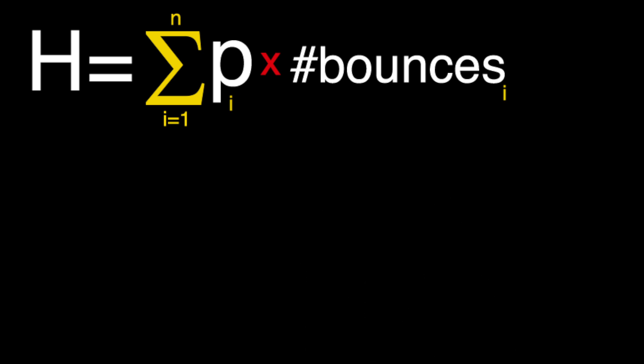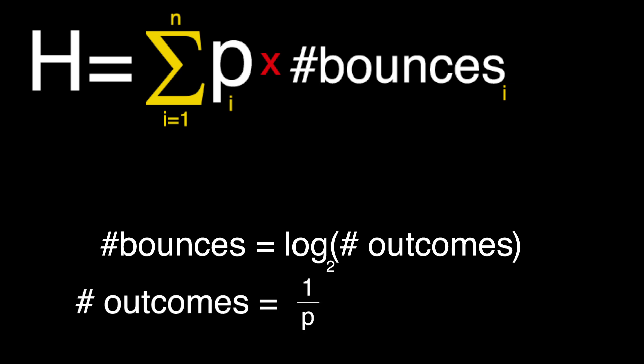And we can simplify this by saying that the number of bounces equals the logarithm base 2 of the number of outcomes at that level. And the number of bounces at a level is also based on the probability, where the number of outcomes at a level equals 1 divided by the probability of that outcome.